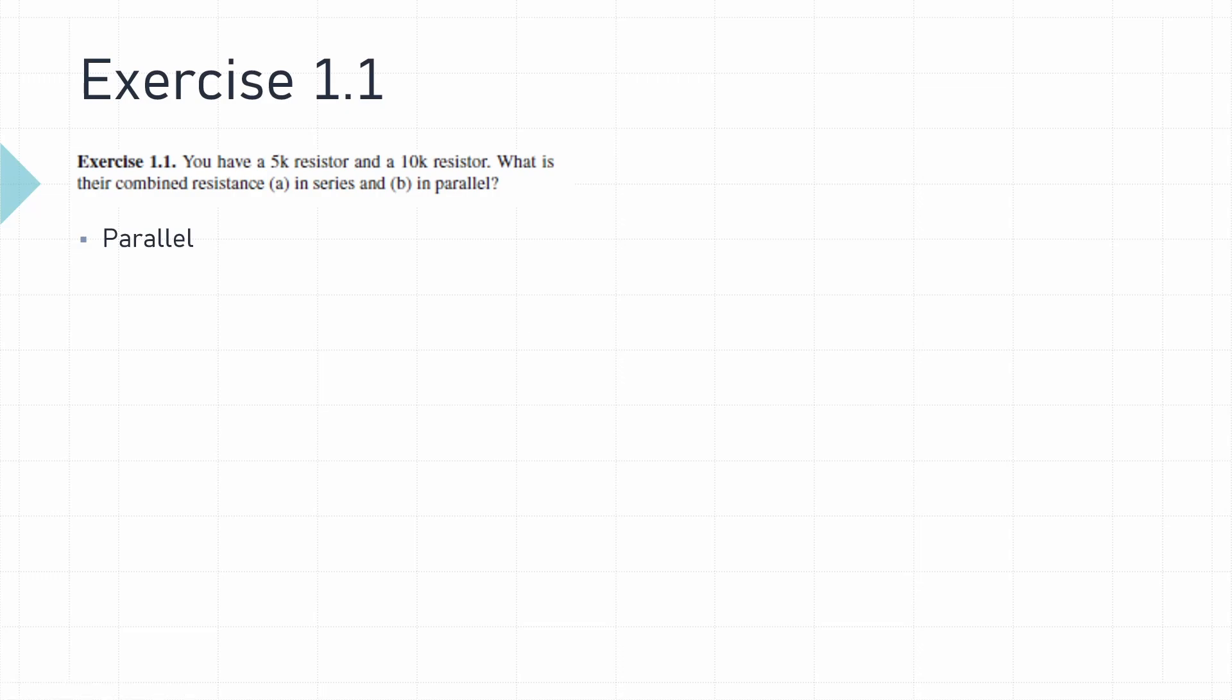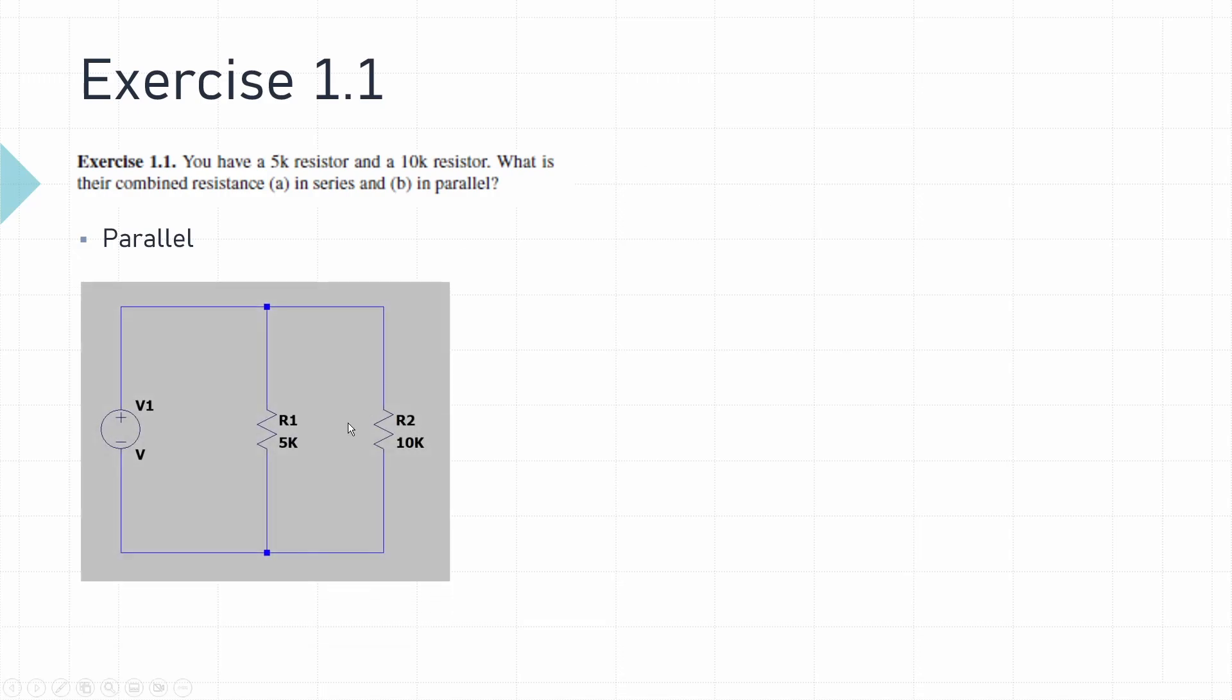The second exercise is looking at the resistors in parallel. What this means is the resistors are connected together so that both connections of the resistor are joined together in this format here.